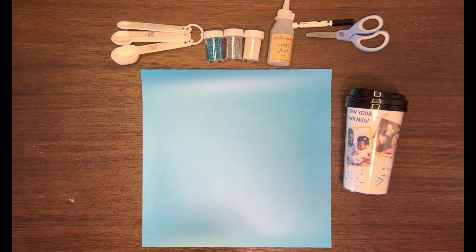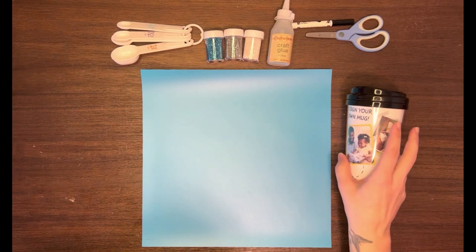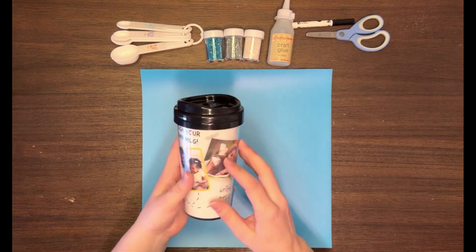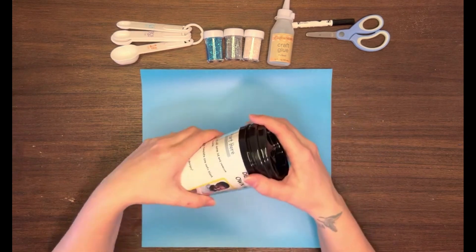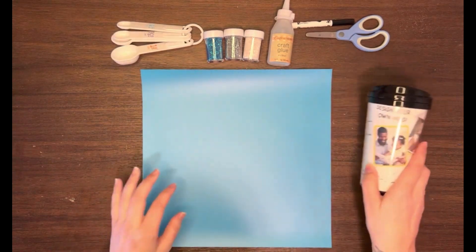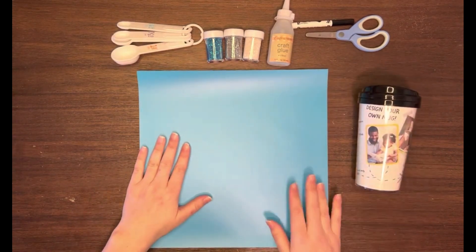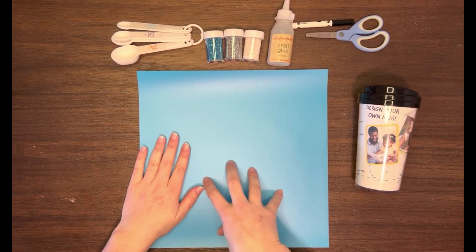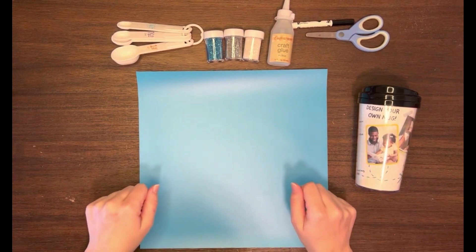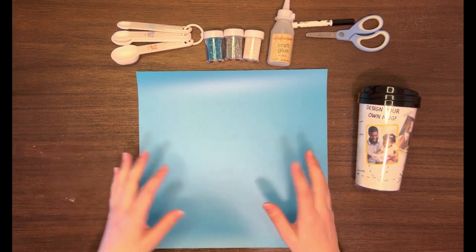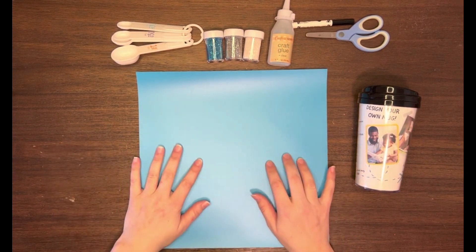The materials we need for this project are the Dollar Tree Design Your Own Mug with a twist top that screws off. You'll need vinyl—either permanent or removable, whatever works for you. I notice that permanent sticks better and you have less giveaway with it, so I prefer permanent vinyl.